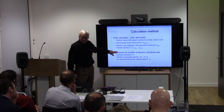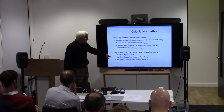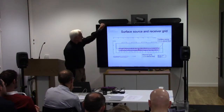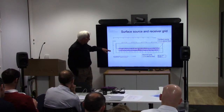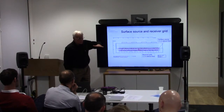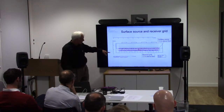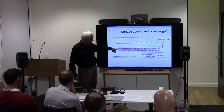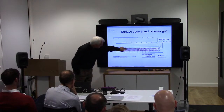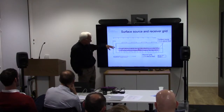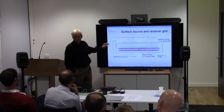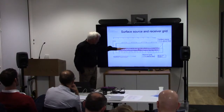The next step is to adjust for the actual number of persons and the group size. In this dining room example, we have the tables with people sitting on both sides. The red line represents the surface source covering the whole area above the tables, chosen at a height of 1.5 meters above the floor. Below, the blue line represents the grid of receivers — the distance here is just 30 centimeters. I tried many different positions of the surface source during development and it had absolutely no influence — it was marginal — so why not put it at a realistic height?